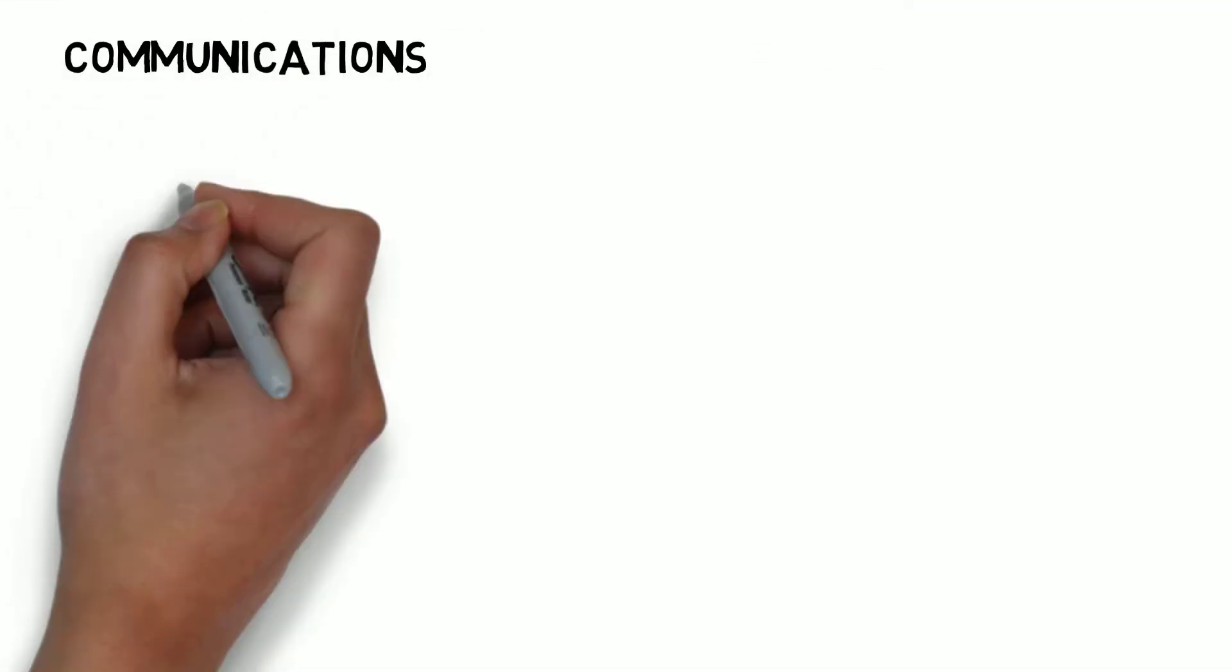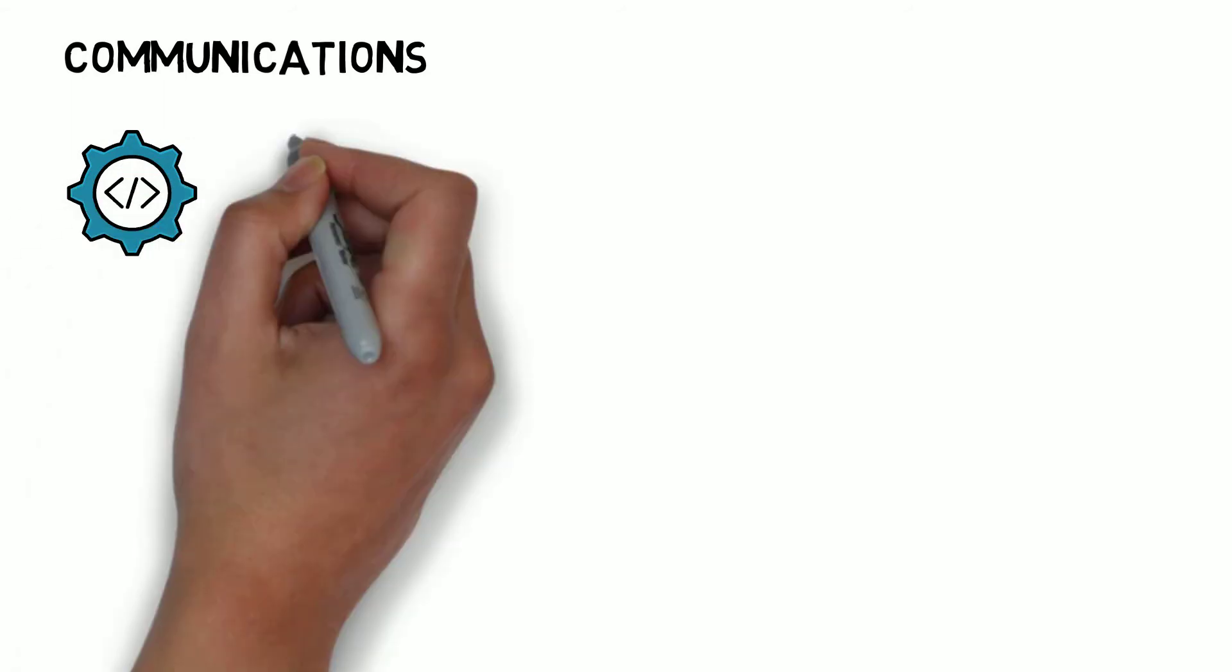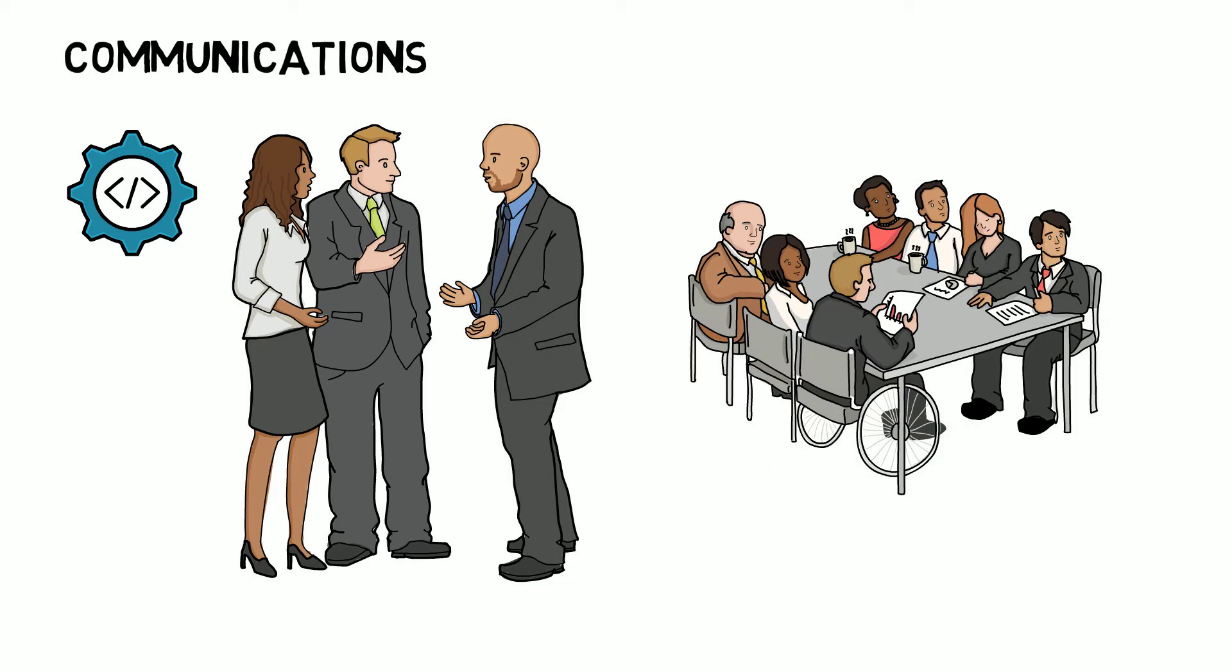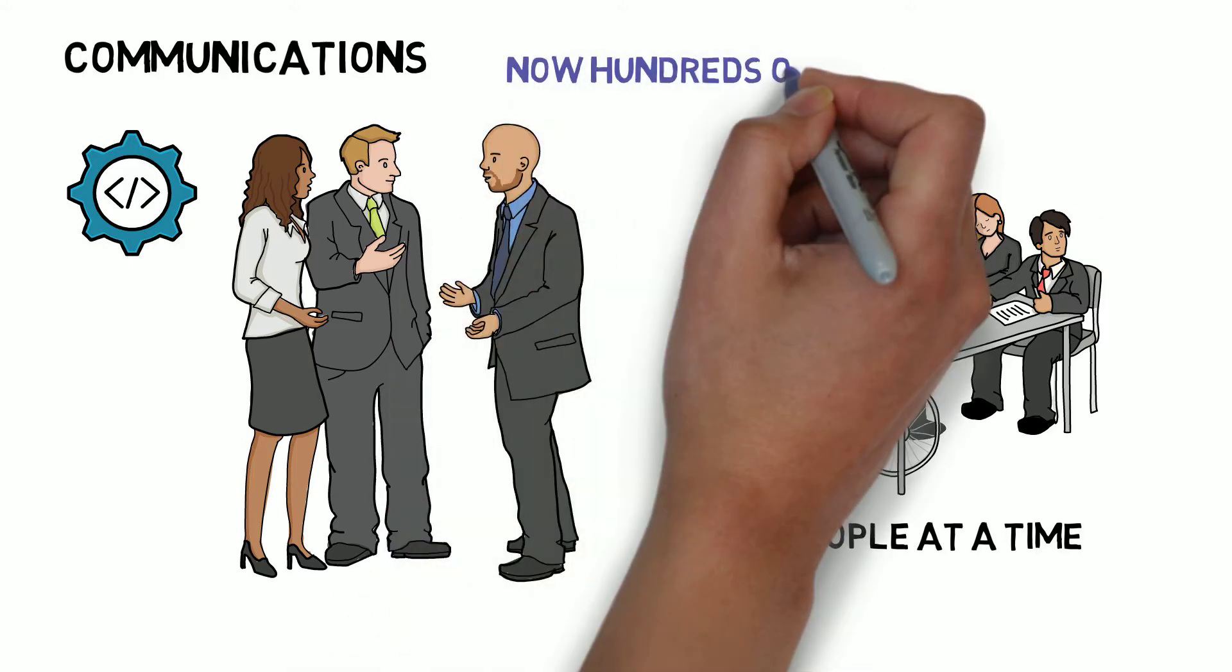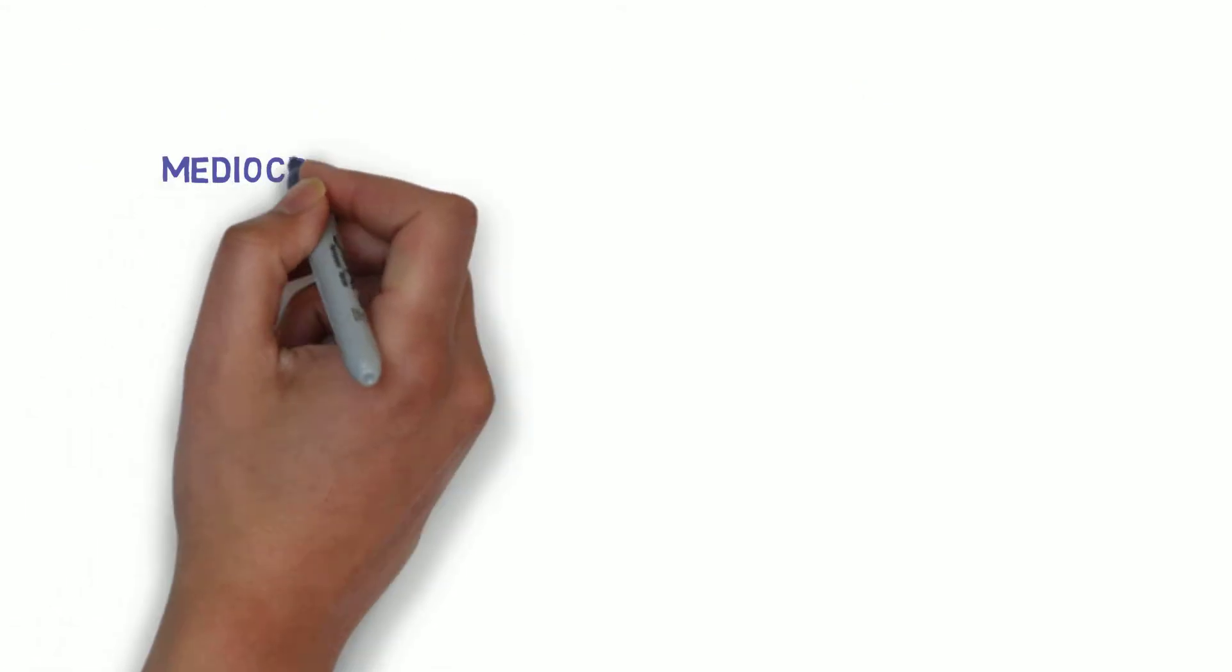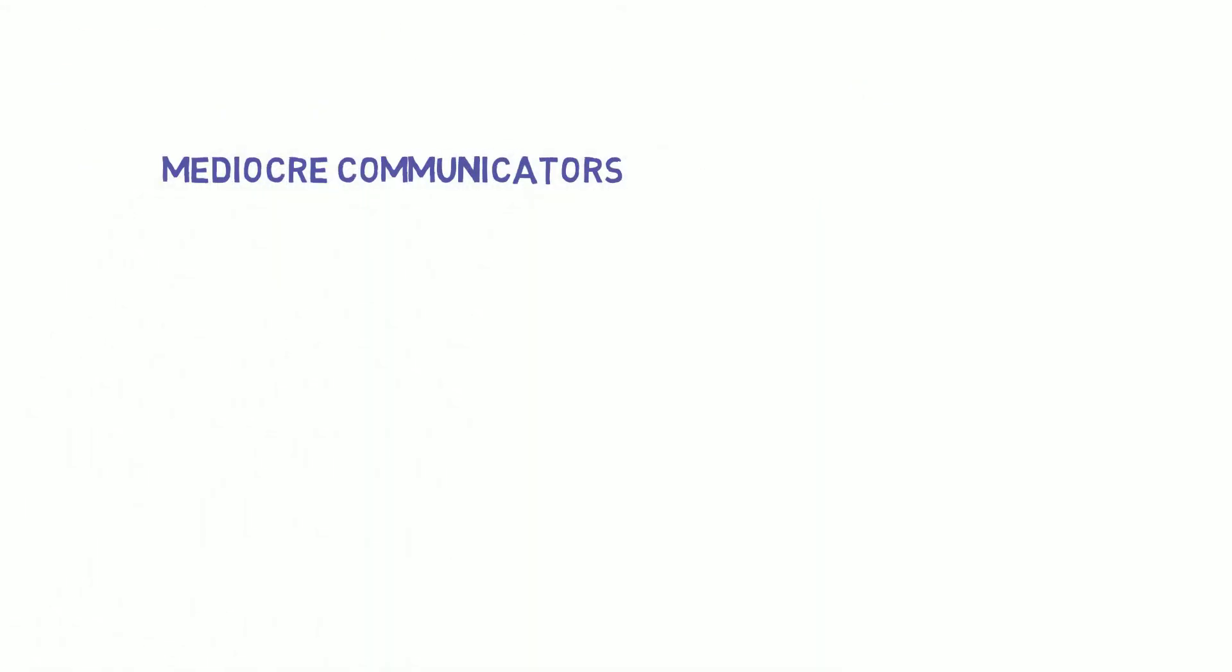Communication. The world needs things to be coded and it needs things to be communicated as well. 30 years ago, you could talk to rooms of 100 people at a time. How many people do we speak to now? Here the good news is, you can speak to hundreds of thousands of people at a time. The bad news is, all the mediocre communicators can't speak to anybody.